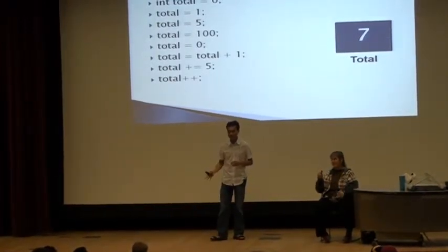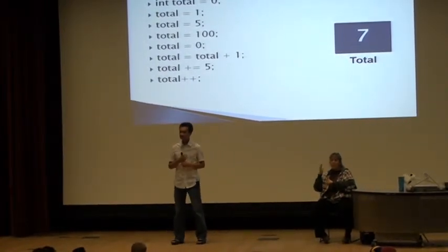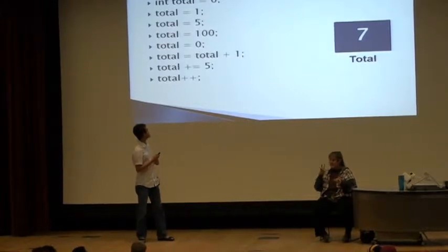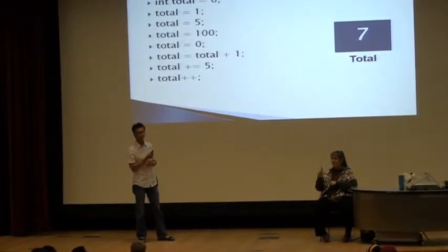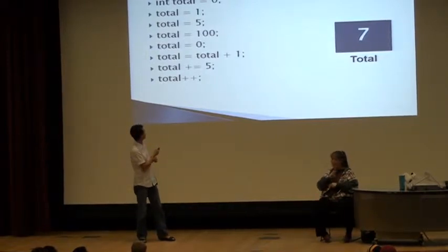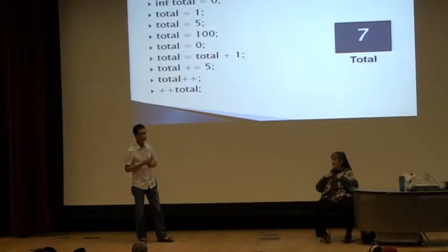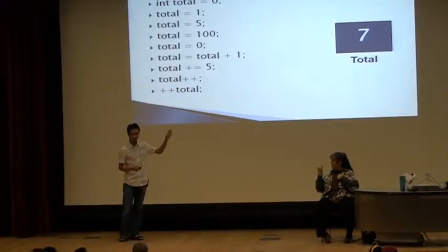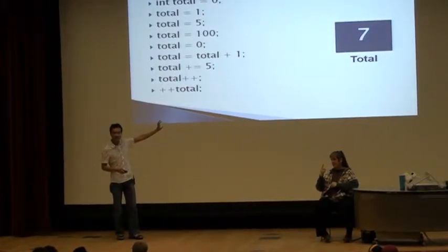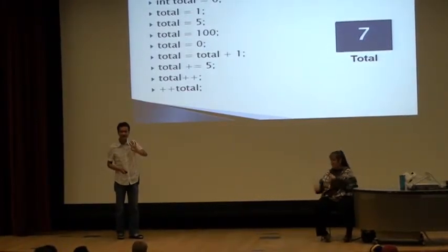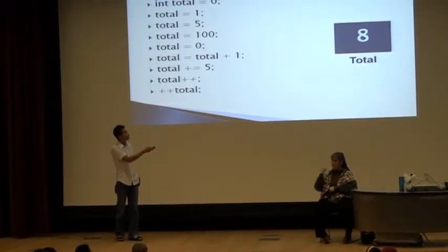What about plus plus total? It was six, and then plus plus total, so now we have, it will give you eight. We're still adding one to it. The fact that we do it before and after doesn't change the fact that we're adding one to the variable total. It will go from total being seven, it will add one, and it will go to eight.